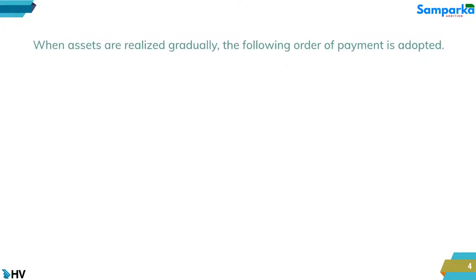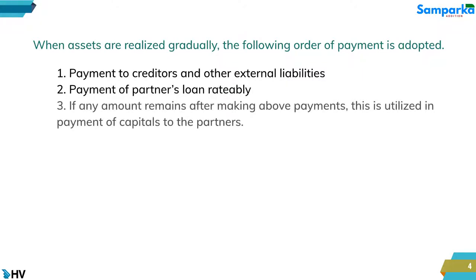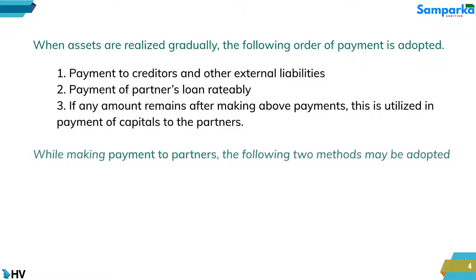When assets are realized gradually, the following order of payment is adopted: 1. Payment to creditors and other external liabilities. 2. Payment of partners' loan rateably. 3. If any amount remains after making the above payments, this is utilized in payment of capitals to the partners.